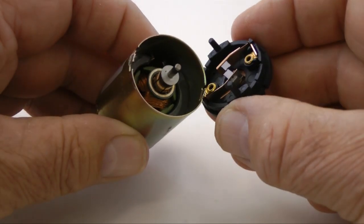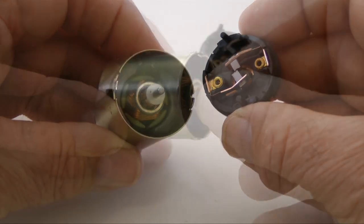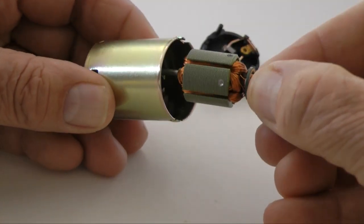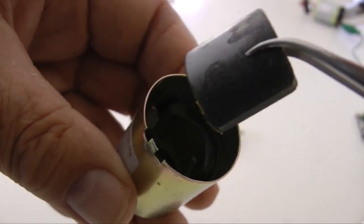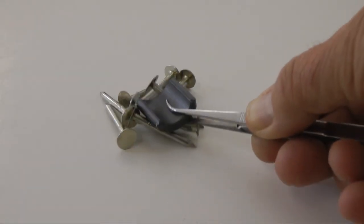I'm pulling the end off of this DC motor. These are the permanent magnets. This is what they look like. As you can see, they are powerful magnets.